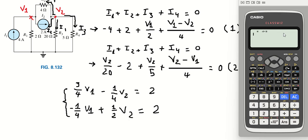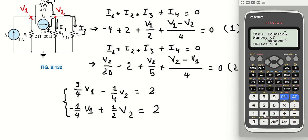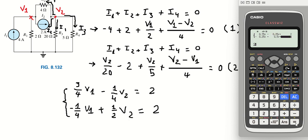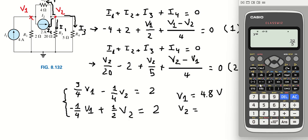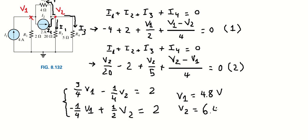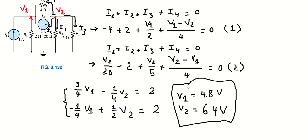We use a calculator and put in the values. V number one is 4.8 volts and V number two is 6.4 volts. Here is the answer. This is the end — thank you for watching.